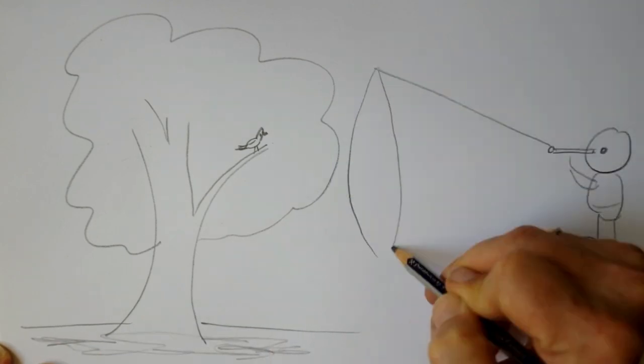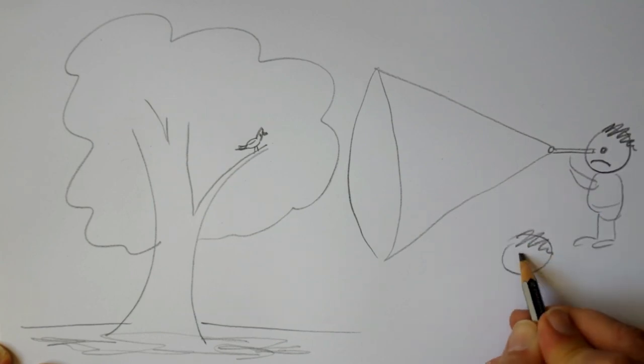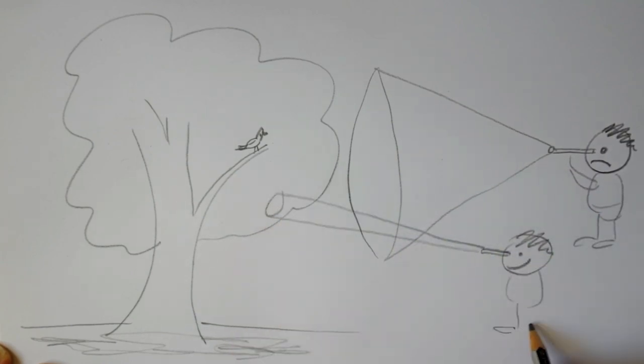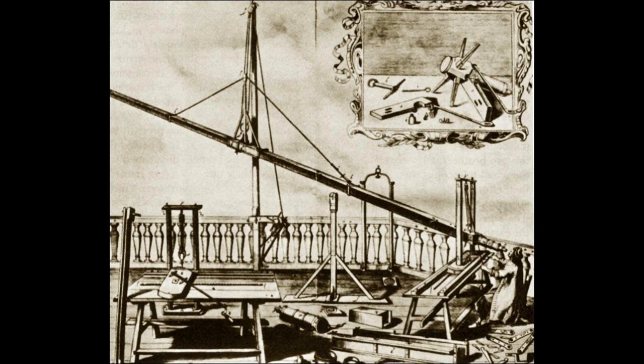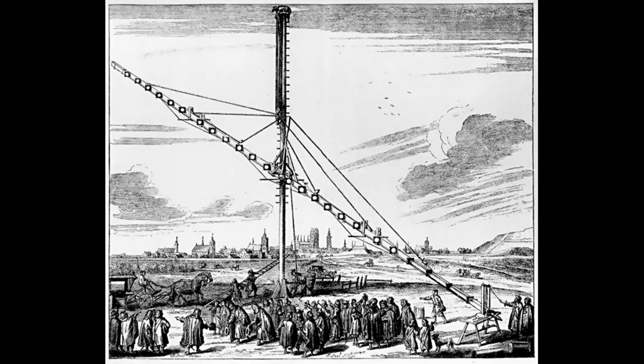A wide cone means less magnification, and a narrow cone means more magnification. This is why they used to build really long scopes. I mean really long scopes.